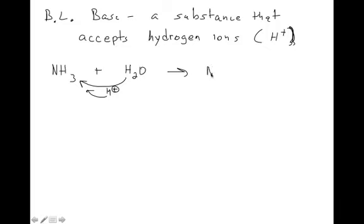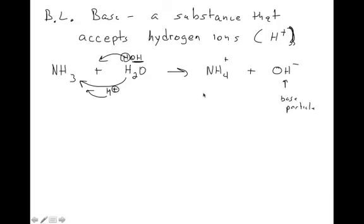When NH3 accepts that hydrogen ion, it becomes NH4⁺. Water can be written as HOH — when it donates that hydrogen over, what remains is OH⁻, which is our base particle. So ammonia is a base not because it releases an OH, but because it accepts a hydrogen, which produces an OH⁻ from the remaining water. That's why the solution is basic — ammonia is a Bronsted-Lowry base.